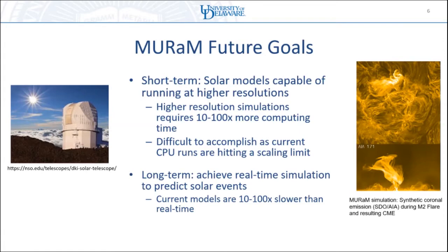A more long-term goal is that MURaM currently runs quite a bit slower than real time. If we want to do predictions — for example, the image on the right shows a solar flare ejection from the surface of the sun — the code would have to run faster than real time. This GPU port alone is probably not enough to bridge that gap, but it's an important portion of doing so.